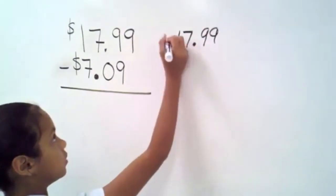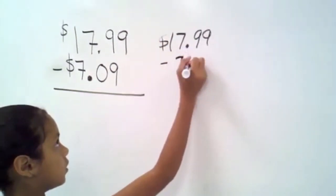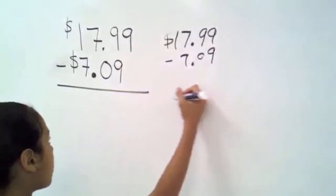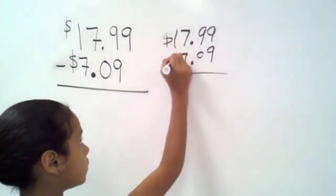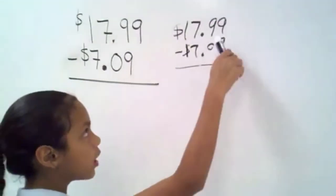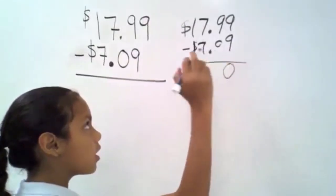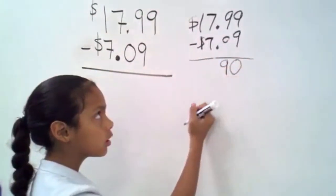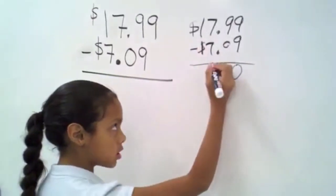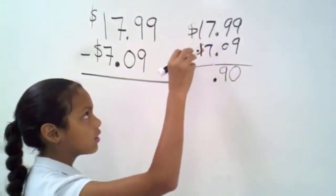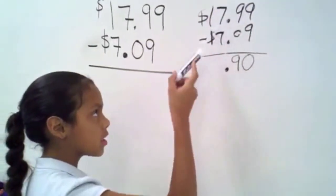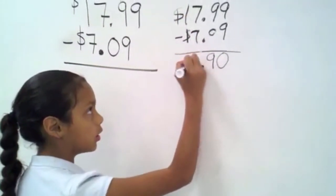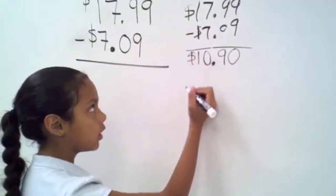Finally, that's going to be five minus nine which equals zero. The next thing we gotta do is nine minus zero which equals nine. Next we gotta bring down the decimals. Then the next is we gotta do seven minus seven which equals zero. And the next is one minus nothing which equals one. And the answer is $10.90.